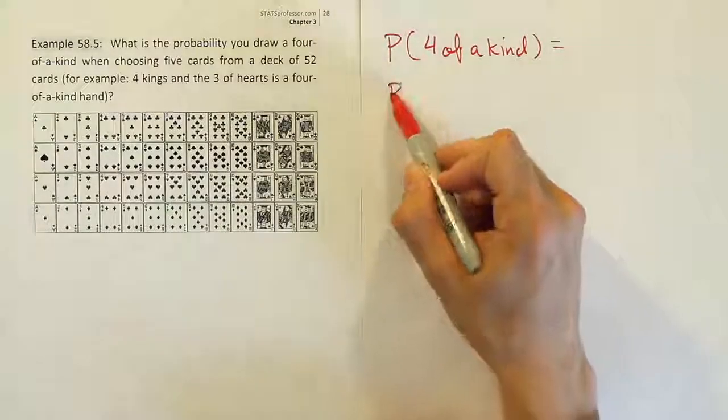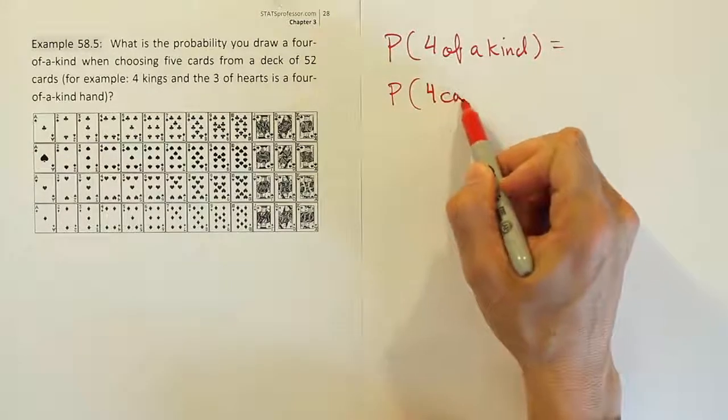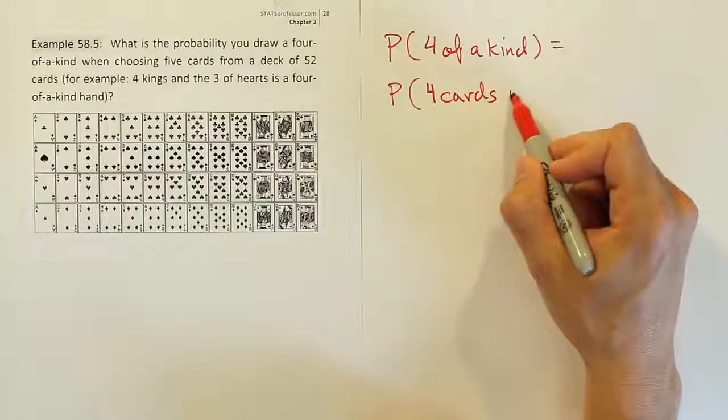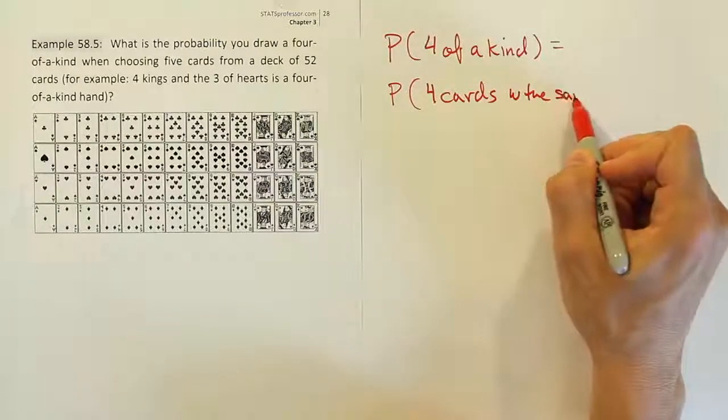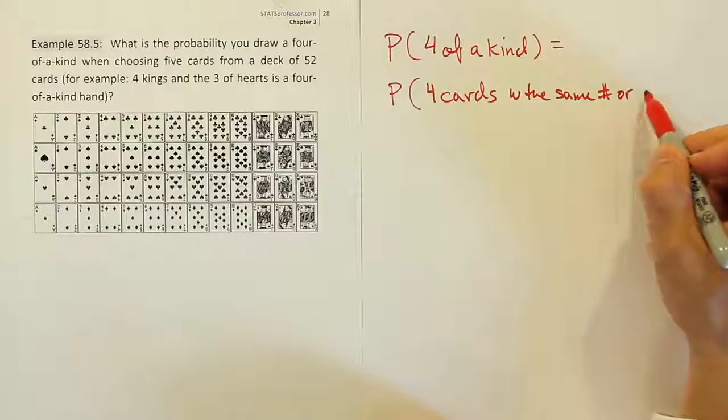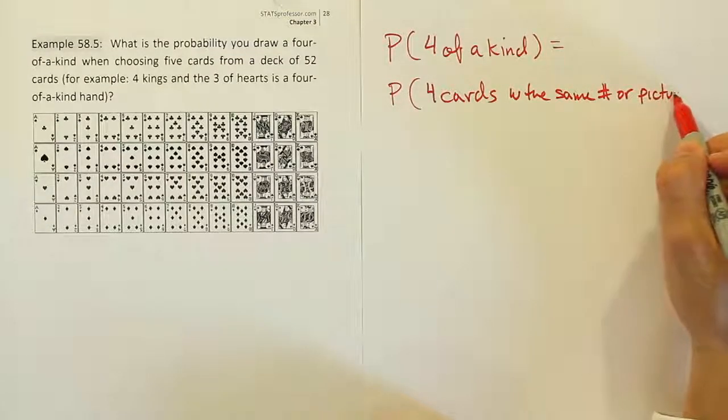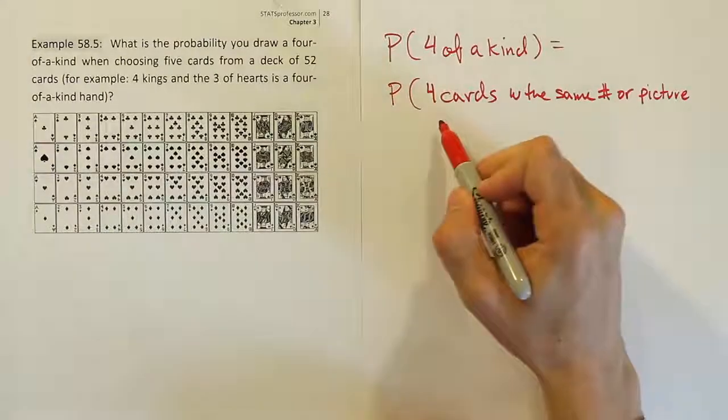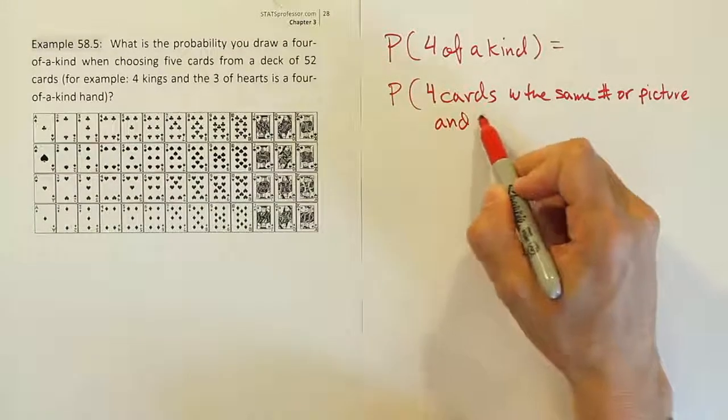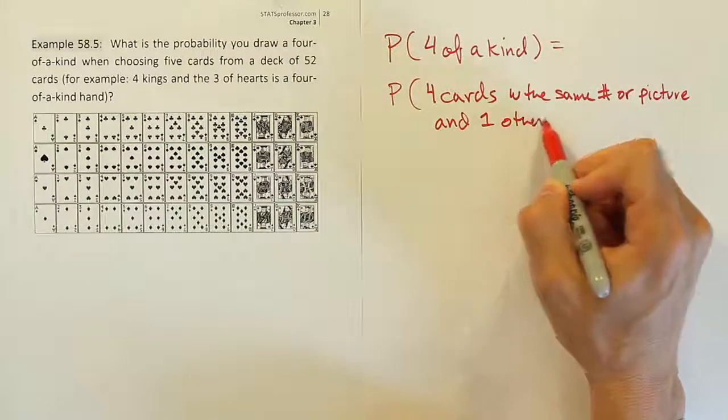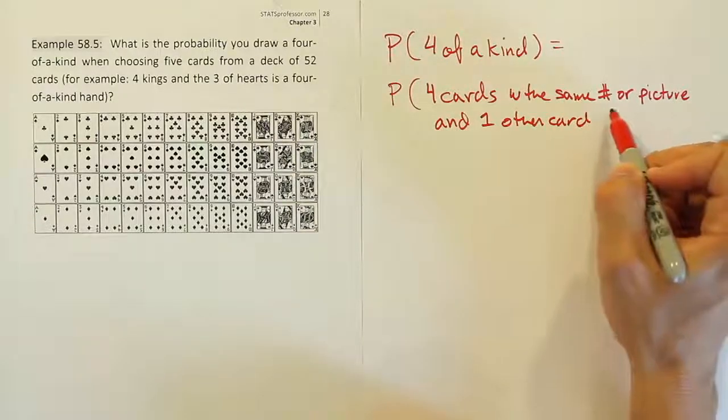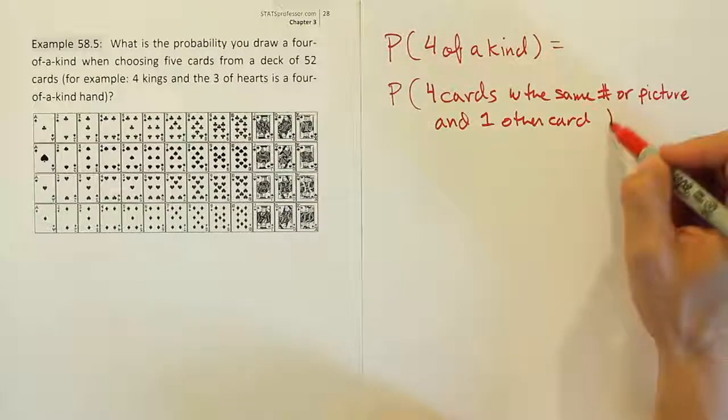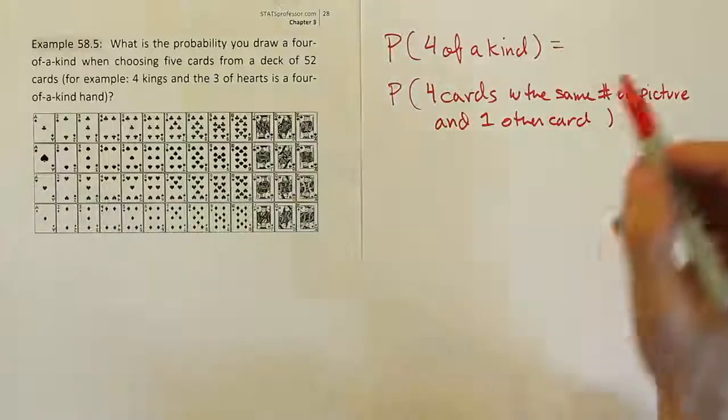To answer this, you'd have to break it down and say, well, that's the probability of what? Four cards with the same number or picture. So in other words, what we mean by that is the four cards have like the number four on them or the number five on them, or four cards with the same picture, like all jacks or all kings. And one other card. Any other card.